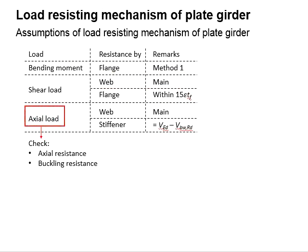As for the axial shear load, the web carries a main role while the stiffener is just to top up the axial resistance of the member. While undergoing axial load, we need to check for the axial resistance of the member and also the buckling resistance of the member.